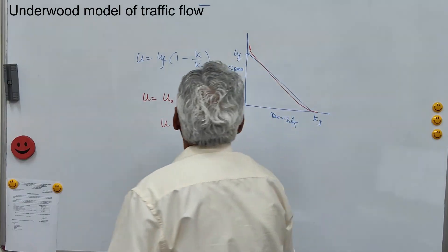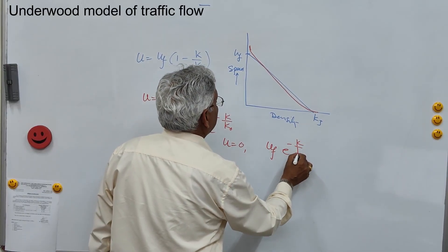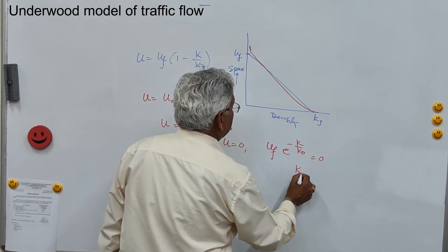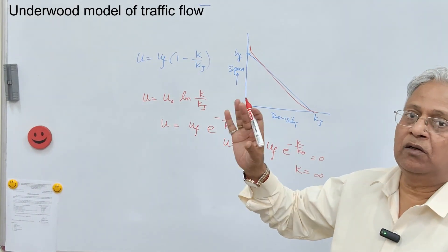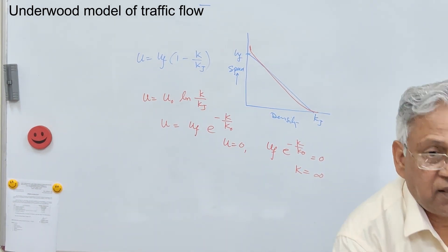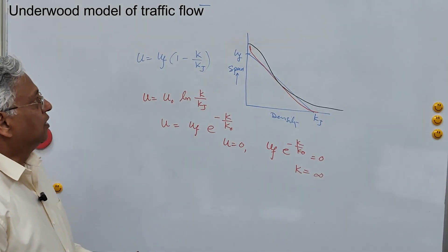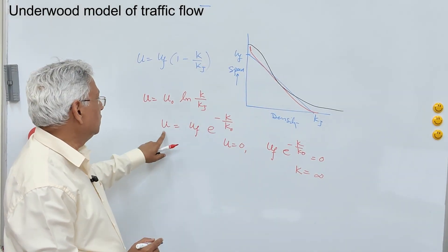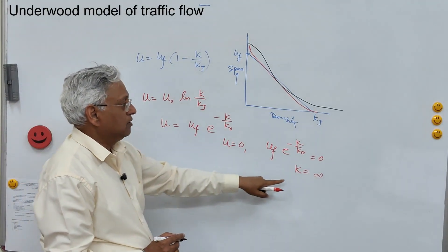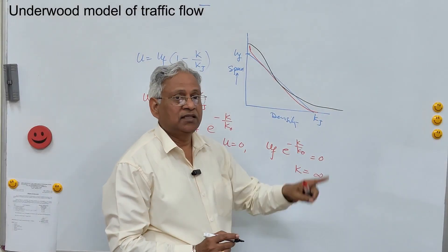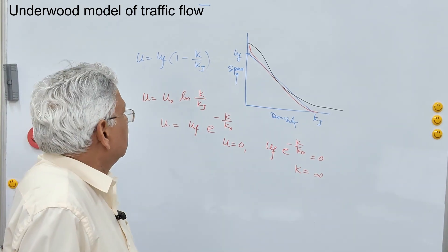Now if you look at it, when you take u equal to 0, then uf times e to the power minus k upon k0 equals 0, which means k will be infinite. So speed becomes 0 only when density is very high, very close to infinity. When k equals 0, u is uf, the free flow speed — so this point is defined. But when u is taken as 0, k becomes infinite, so that point is not defined. This model does not predict speed at high densities, and that is the weakness of the Underwood model.